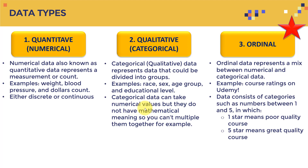Categorical data can take numerical values — this is actually important — but those numbers do not have mathematical meaning. You cannot multiply or add them together meaningfully. For example, whoever has a bachelor's degree might be given zero, master's degree given class one, and a PhD given class two or three. They might have numbers, but you cannot multiply or add them together and come up with something meaningful.